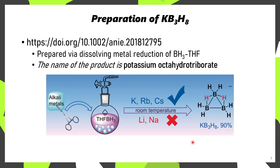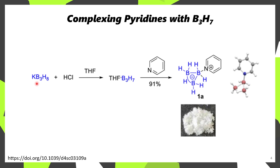The way that this reagent is prepared — or I should say the precursor to this reagent — is through the dissolving metal reduction of BH3·THF. This affords KB3H8, which can be isolated also as the rubidium or cesium salt if you want that for some specific reason. Because there's an extra hydride bound to this, it's first necessary to protonate it with HCl, which liberates hydrogen gas as well as potassium chloride. The resulting B3H7 forms a complex with THF, which can then be substituted through the use of pyridine, and these adducts can be isolated as crystalline salts.